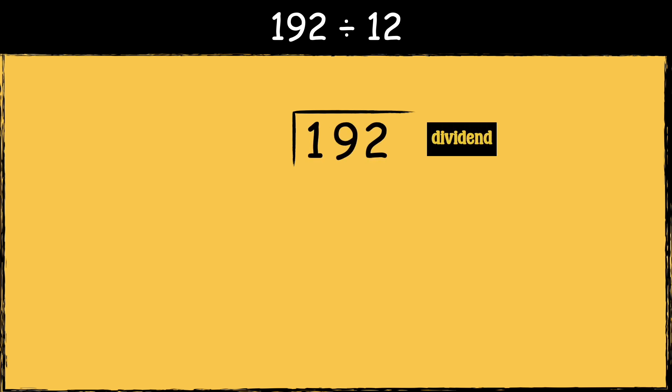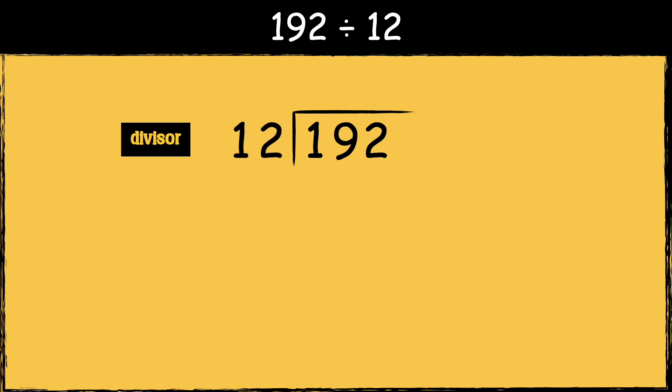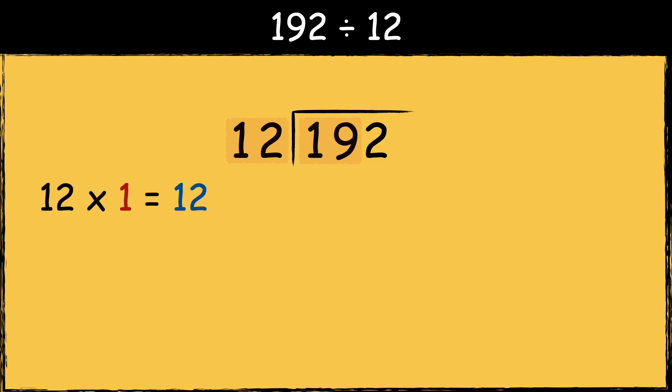Here's the first example: 192 divided by 12. First we need to draw the bus stop. We put the number that we're dividing — the dividend — inside the bus stop, and we put the number that we're dividing it by — the divisor — next to the bus stop. We need to see how many times 12 goes into 1. As we can't fit 12 into 1, we need to chunk the first two numbers. So how many times does 12 go into 19? 12 goes into 19 once, so 1 goes at the top.